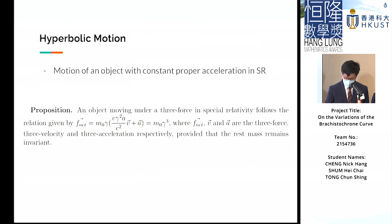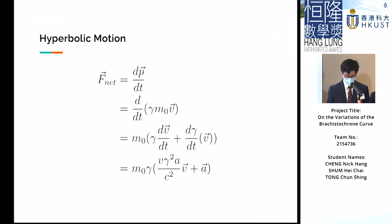Not completely satisfied with the result under special relativity, we were also curious about what would happen to the Brachistochrone curve when objects undergo hyperbolic motion, the motion of an object with constant proper acceleration in special relativity. We first proposed a variant of Newton's second law applicable to special relativity, with f = m0γ³ times the acceleration vector.